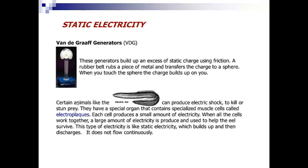Certain animals, like the electric eel, produce an electric shock to kill or stun prey. They have a special organ that contains specialized muscle cells called electroplax. Each cell produces a small amount of electricity. When all the cells work together, a large amount of electricity is produced and used to help the eel survive. This type of electricity is like static electricity, which builds up and then discharges. It does not flow continuously.